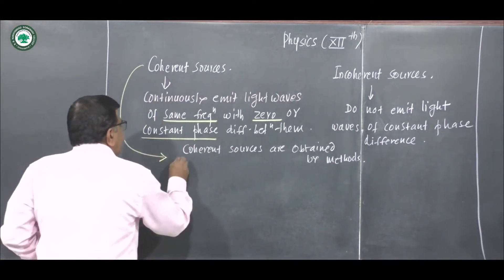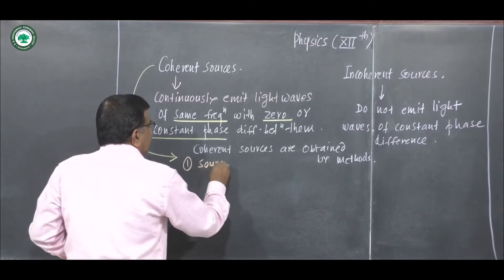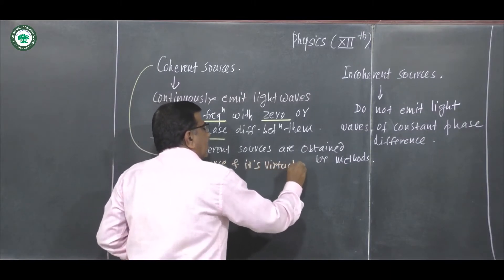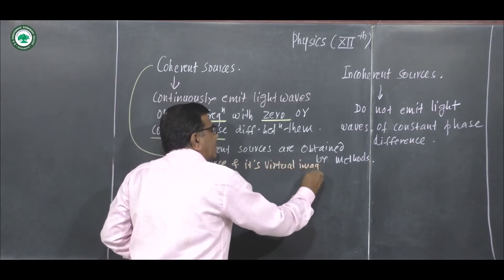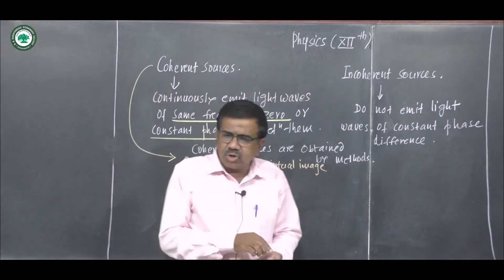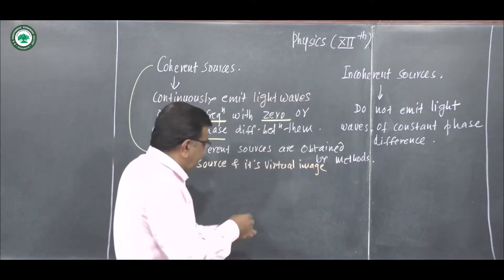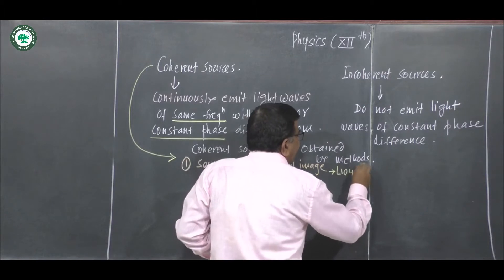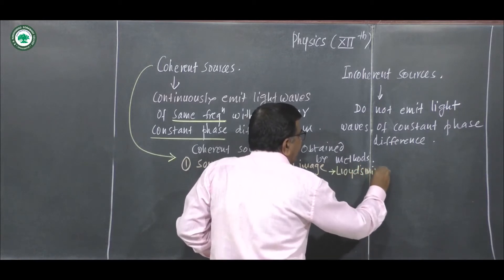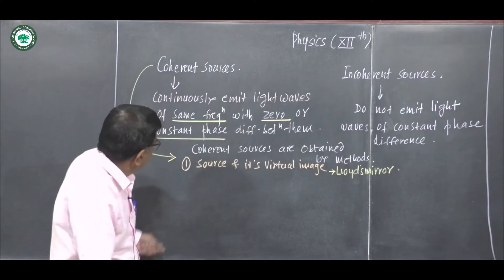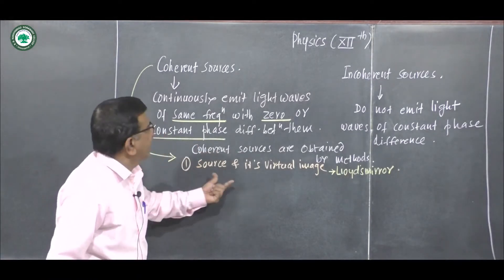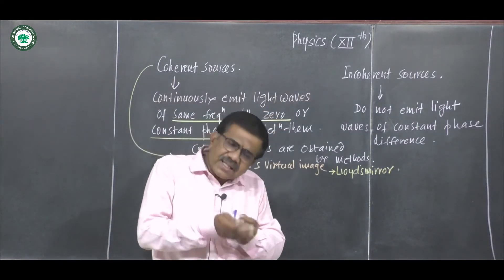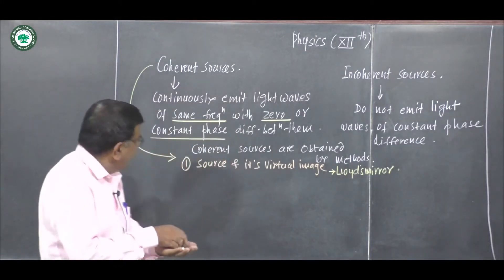The first method is source and its virtual image. By using this way, we can obtain coherent sources in Lloyd's mirror experiment. In Lloyd's mirror experiment, we obtain the two coherent sources by using Lloyd's mirror, where the source and its virtual image act as coherent sources.